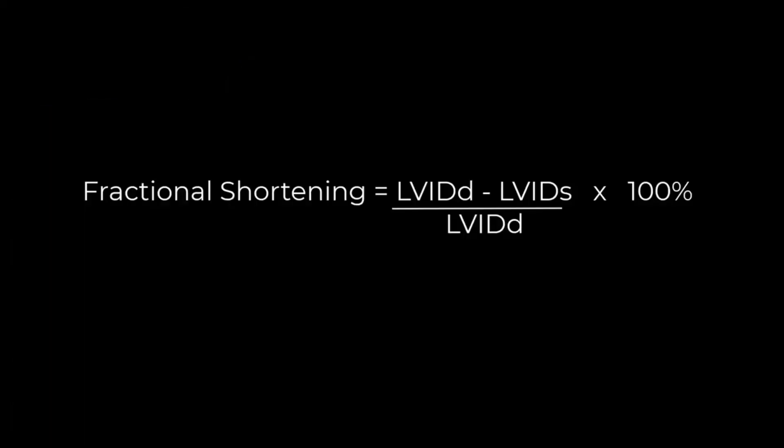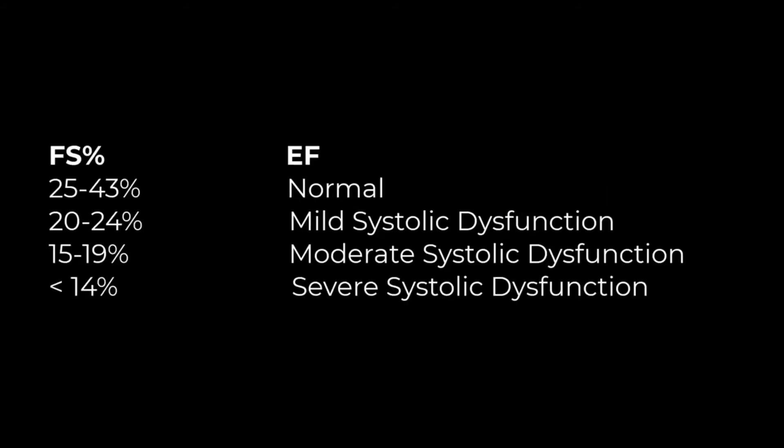We can now calculate fractional shortening. This is the difference between end diastolic and end systolic diameters divided by the end diastolic diameter, multiplied by 100%. Correlation between fractional shortening and EF is shown here. Fractional shortening between 25 to 43% indicates normal EF. A value less than 25% indicates abnormal EF.